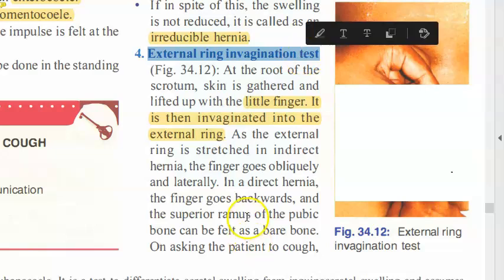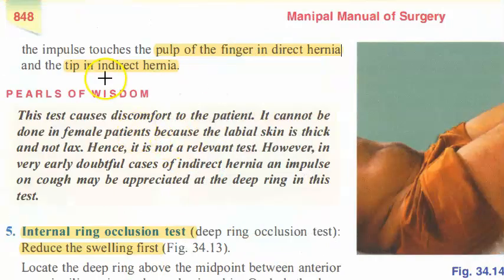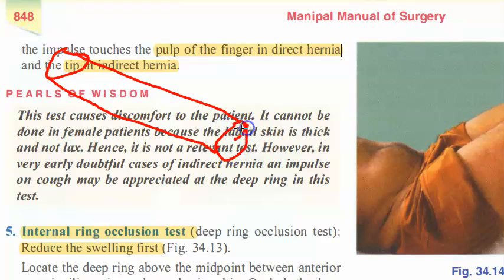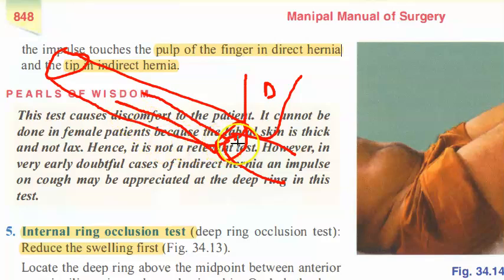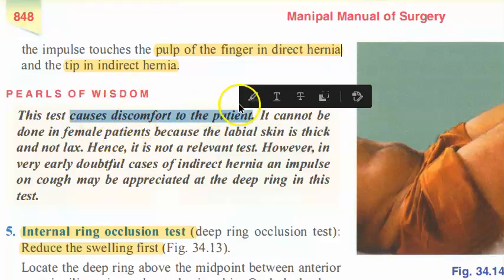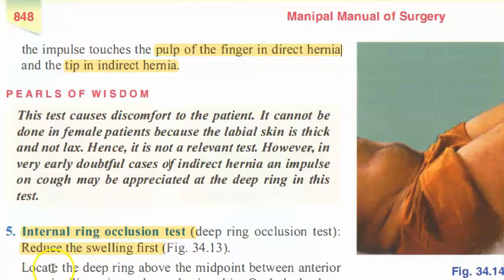Now there is the external ring invagination test. You will place your little finger at the external ring of the inguinal canal and ask the patient to cough. If the hernia content comes and touches the tip of the finger, it is coming via the canal — that means it is an indirect hernia. If it is a direct hernia, it will come and touch the pulp of the finger. This test does cause some discomfort to the patient.